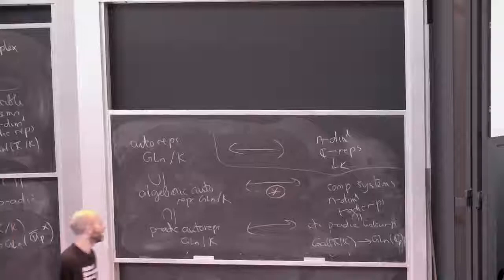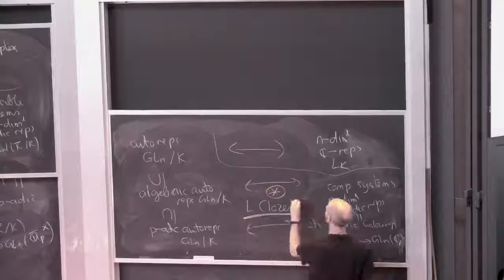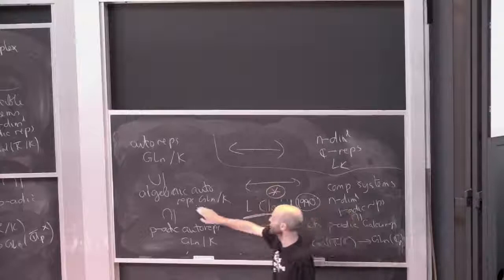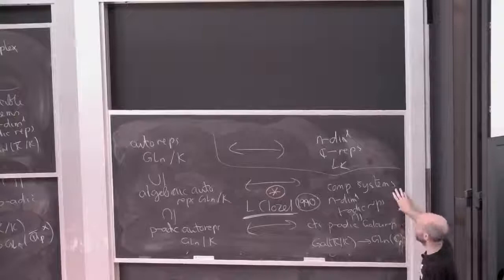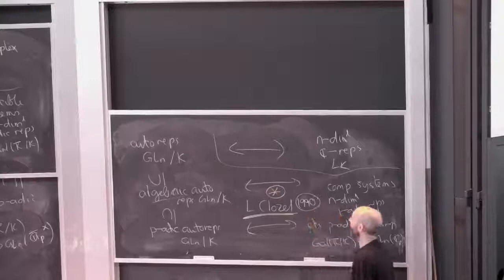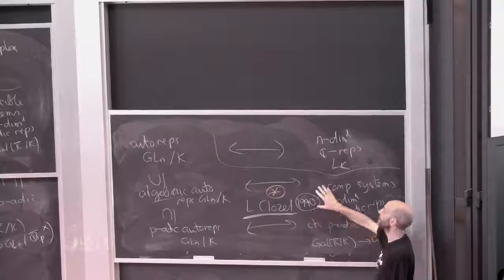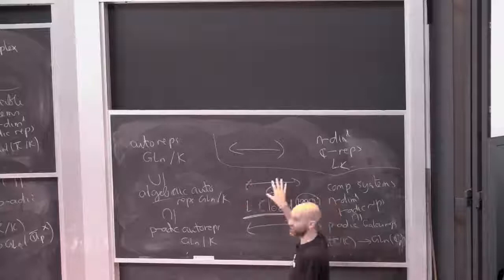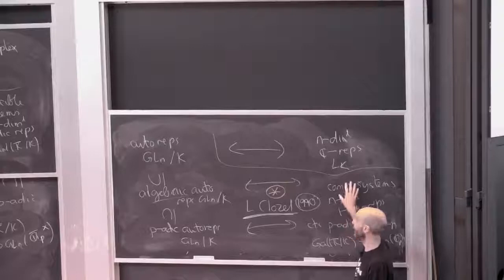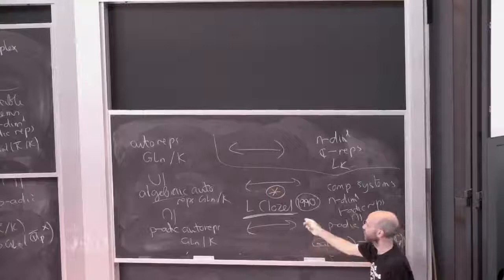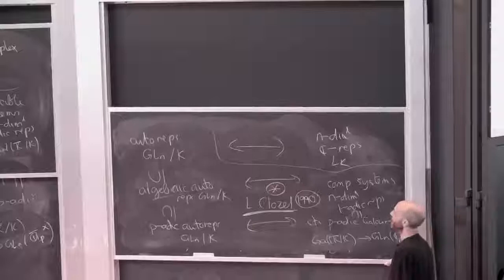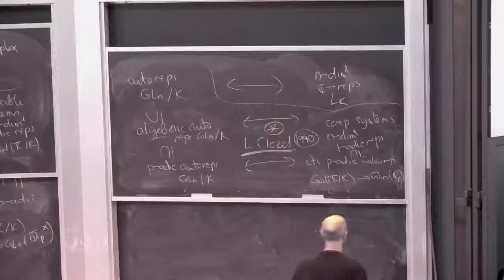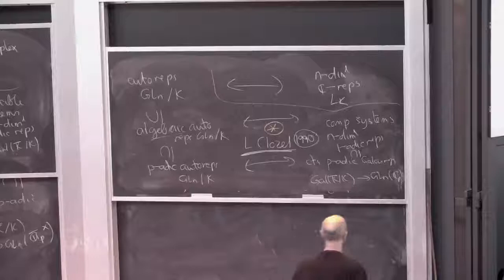There's some notion of what it means to be algebraic; the algebraic ones sit inside the automorphic representations. This arrow — algebraic automorphic reps to compatible systems — is interesting because both sides are defined, so there's a chance we can formulate an actual conjecture. This conjecture was formulated by Laurent Clozel in 1990. He defined what it meant for an automorphic representation to be algebraic, and in 1990 the global Langlands conjectures finally incorporated a statement with real meaning — both sides defined, with how they should match up (characteristic polynomial of Frobenius matching Satake parameters).